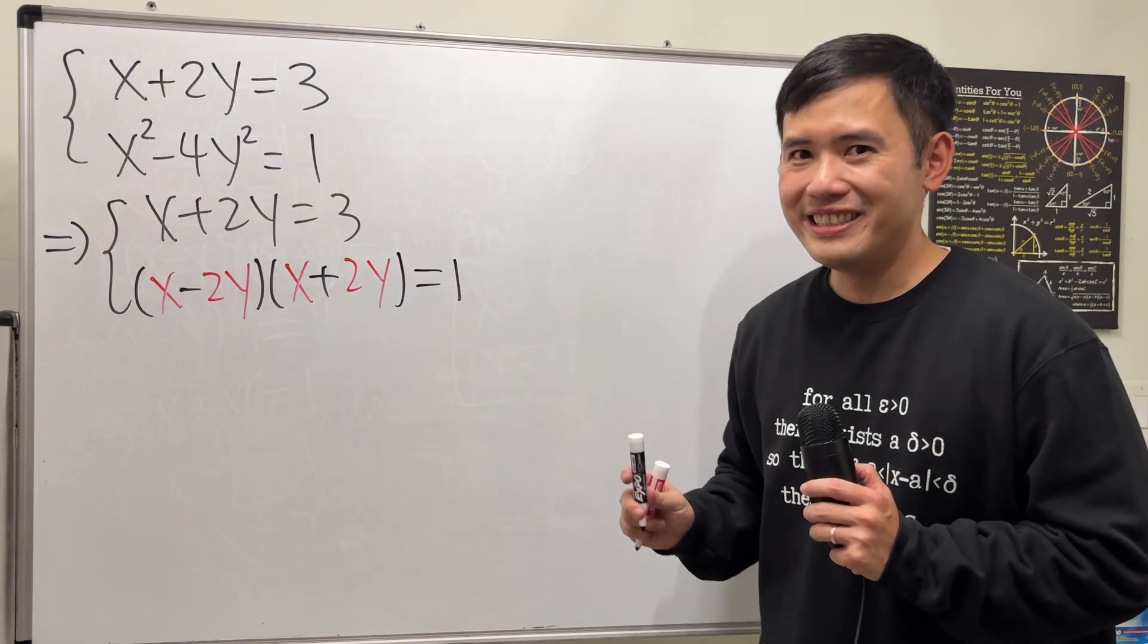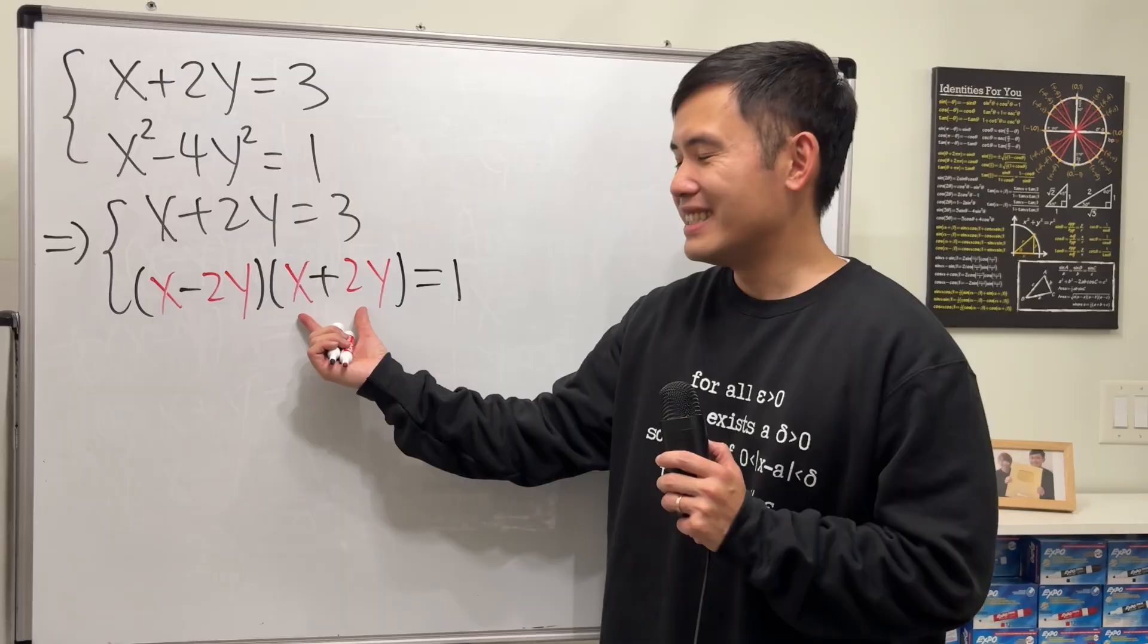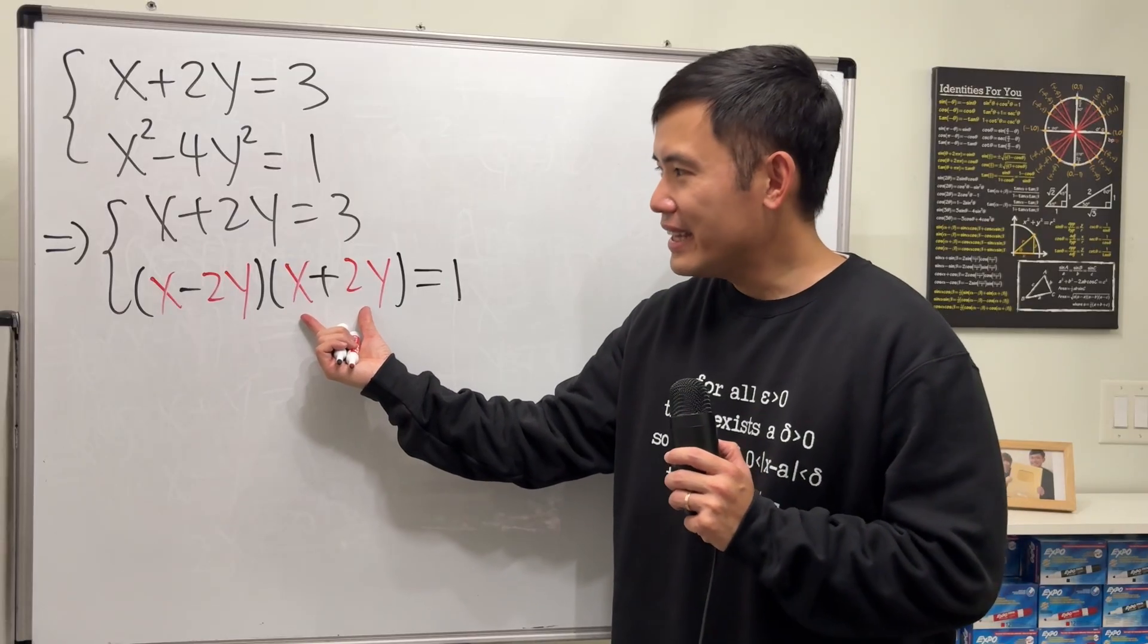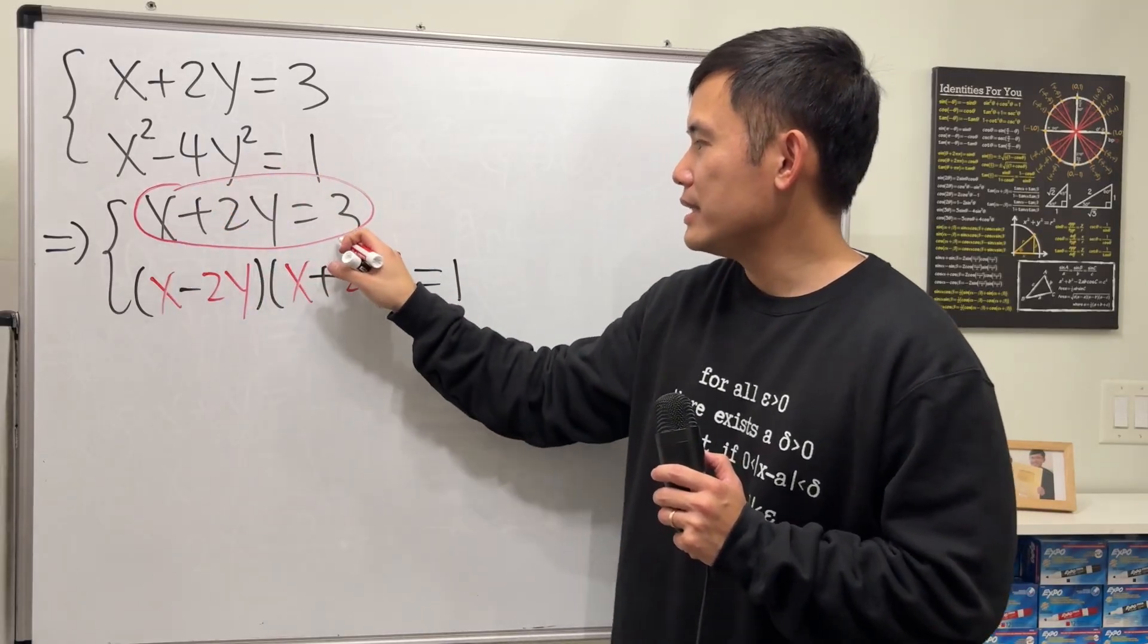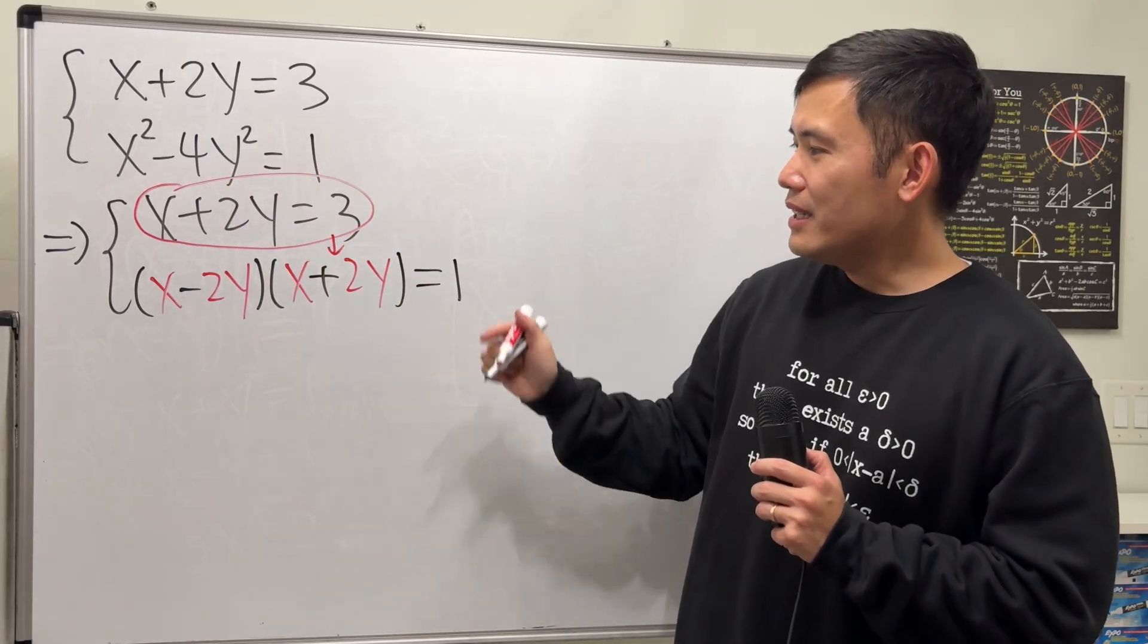Now, what do we see? Well, here we have x plus 2y and that is exactly what we have right here, and we know x plus 2y equals 3. Therefore,